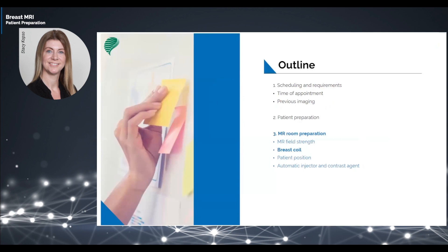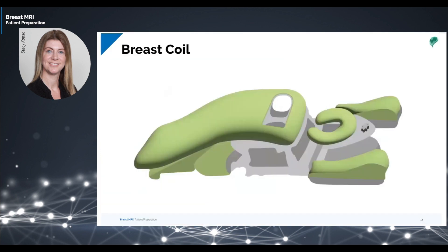Using a dedicated breast coil is mandatory in order to obtain decent diagnostic quality. A breast coil should have at least 4 channels. Modern designs have 16 channels or more, and some designs contain dedicated channels for the axillary region. In general, coils with more channels obtain a higher signal-to-noise ratio. More channels also enable the use of higher parallel imaging factors, which can increase the speed of image acquisition.